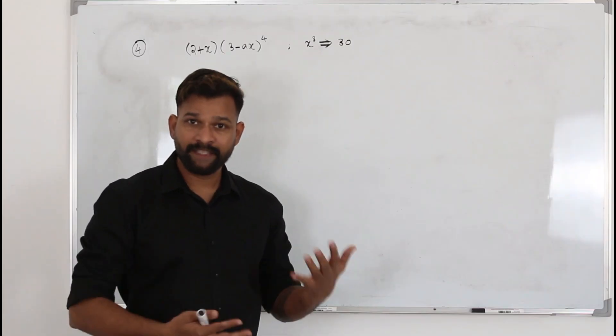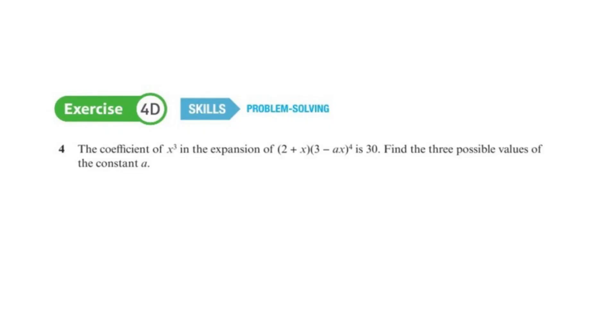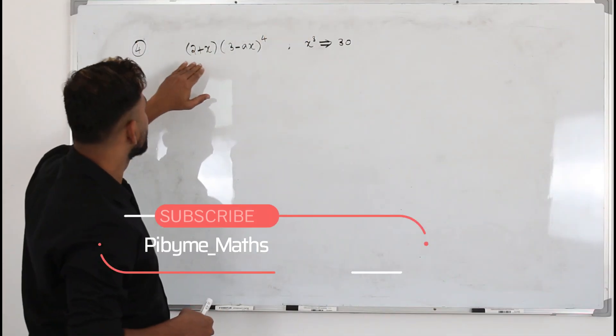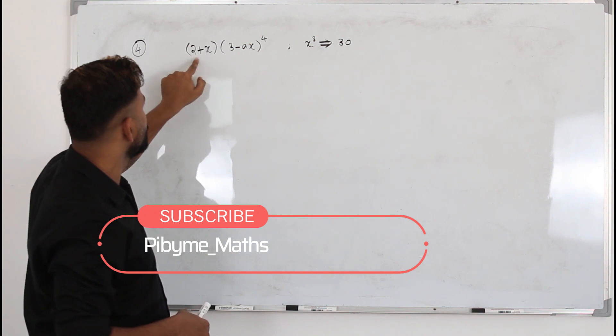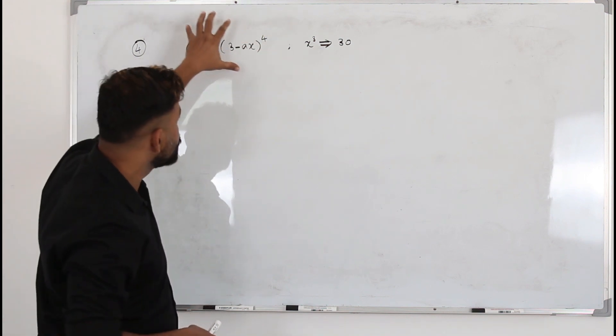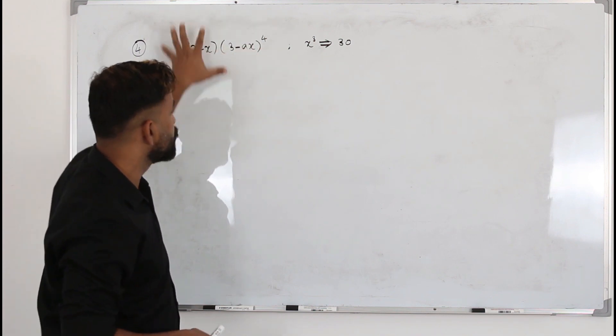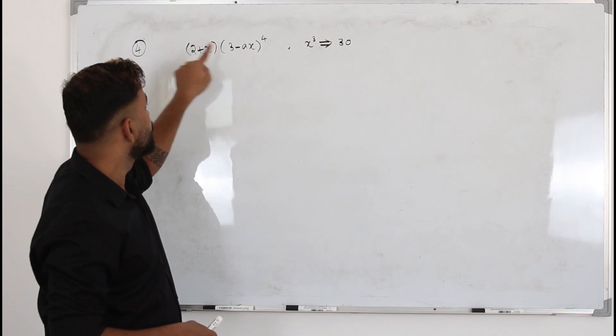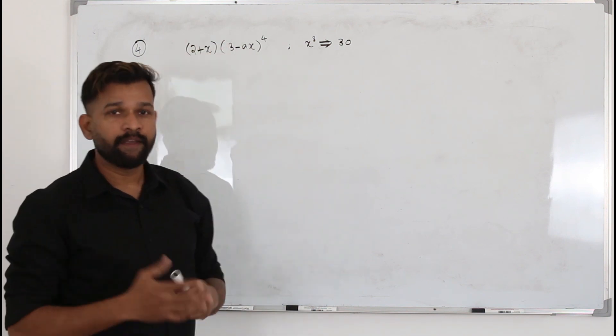This is the continuation of exercise 4D. We have question number 4 here. You have this expression (2+x)(3-ax)⁴, and the coefficient of x³ of this whole expression is 30. They want you to find the three possible values of a.